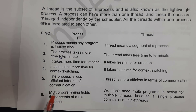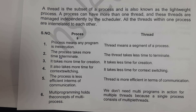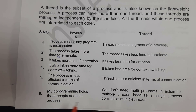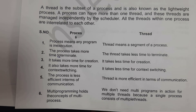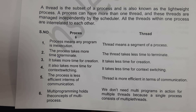A process is less efficient in terms of communication, whereas a thread is more efficient in terms of communication. Multiprogramming holds the concept of multiprocess — if you want to execute multiple programs at a time, then you need multiple processes. Whereas if you want to execute multiple programs, there is no need for multiple threads because each process already contains multiple threads.